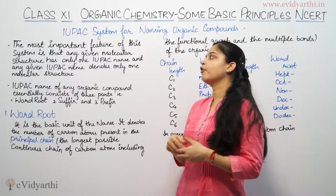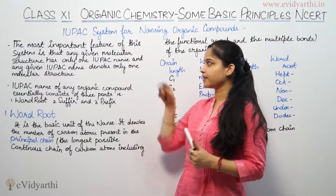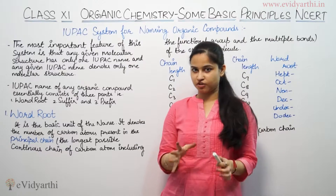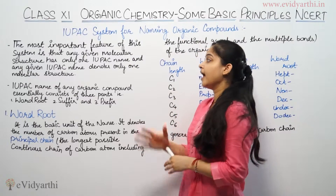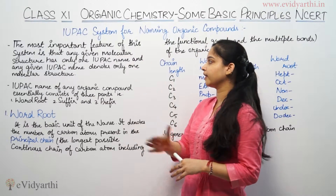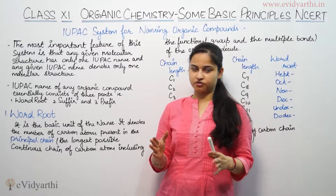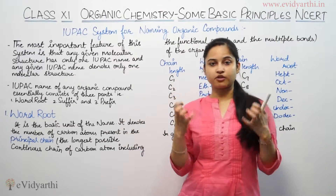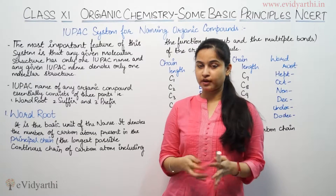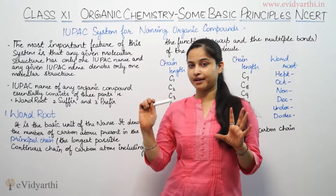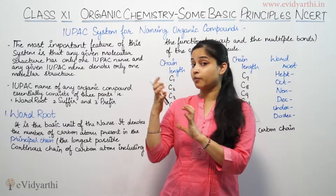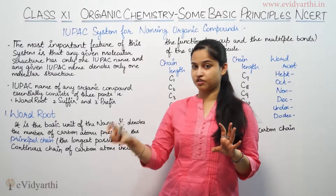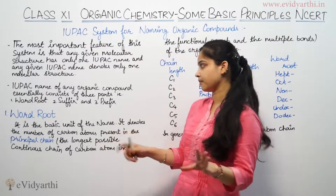The most important feature of the IUPAC system is that a given molecular structure has only one IUPAC name, and a given IUPAC name denotes only one molecular structure. This means any organic compound will have one IUPAC name, and if we get an IUPAC name, it will correspond to one molecular structure — that means vice versa.